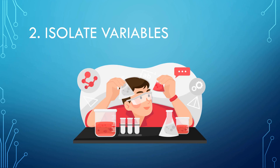Step number two: isolate variables. You need to define when this problem happens, where does it happen, who does this happen to. For example, does this happen on your desktop, your laptop, or both? Does this happen in the mornings, in the afternoon? Does this happen with your coworkers, or is it just you? You need to test and experiment with various different things.